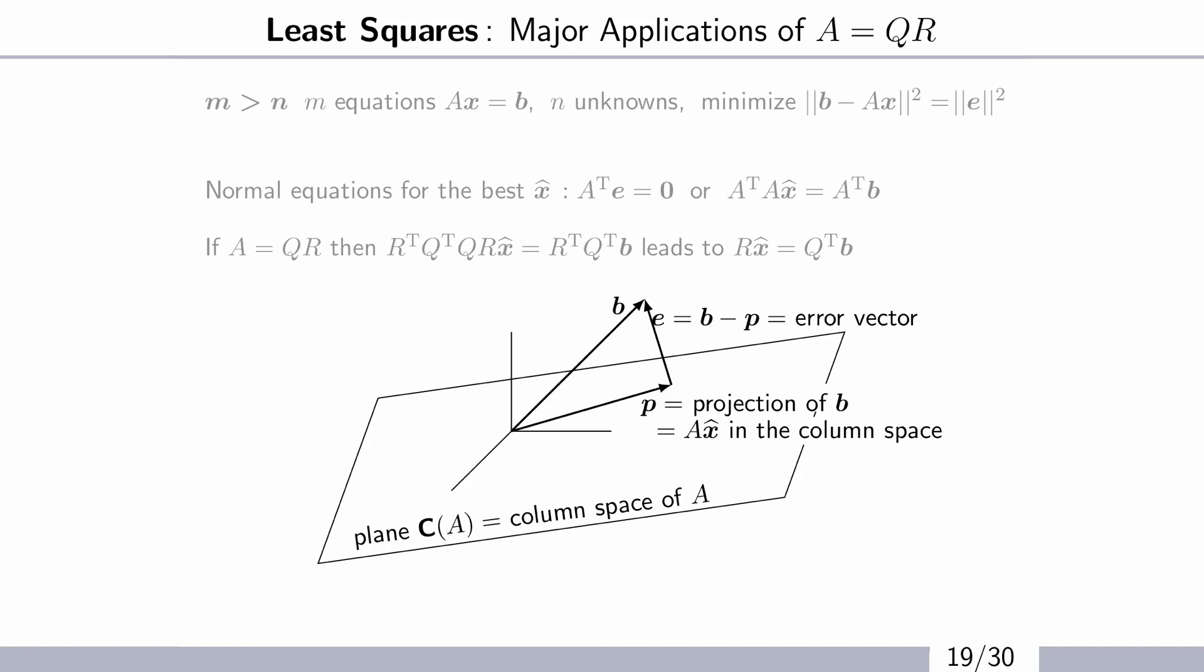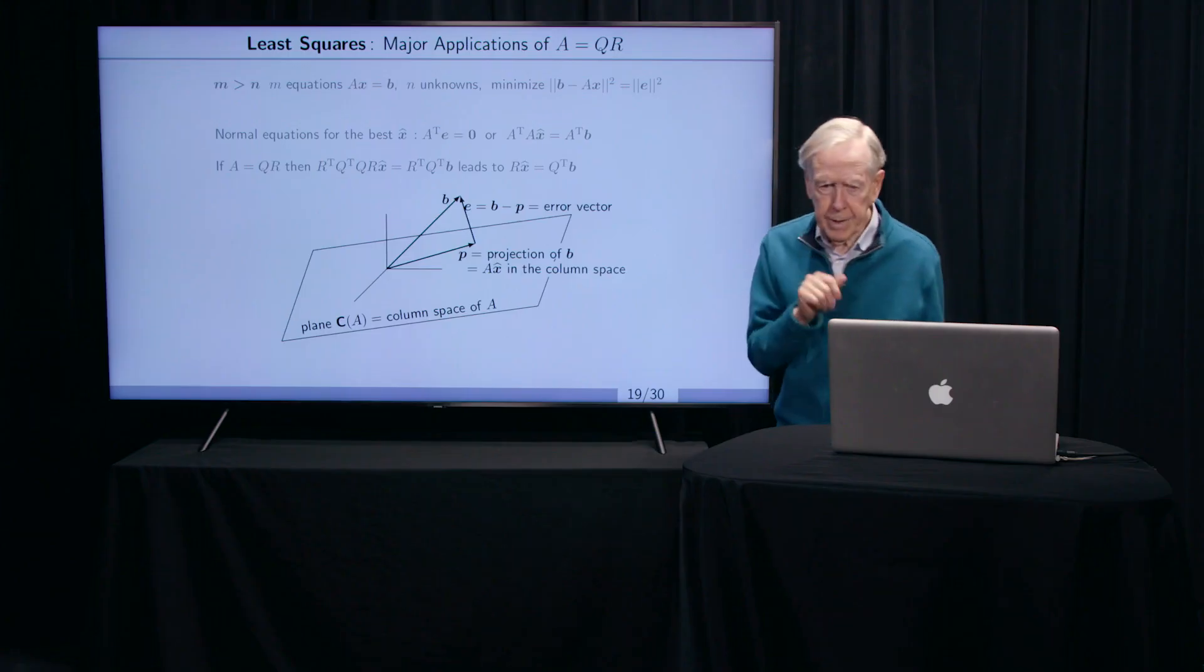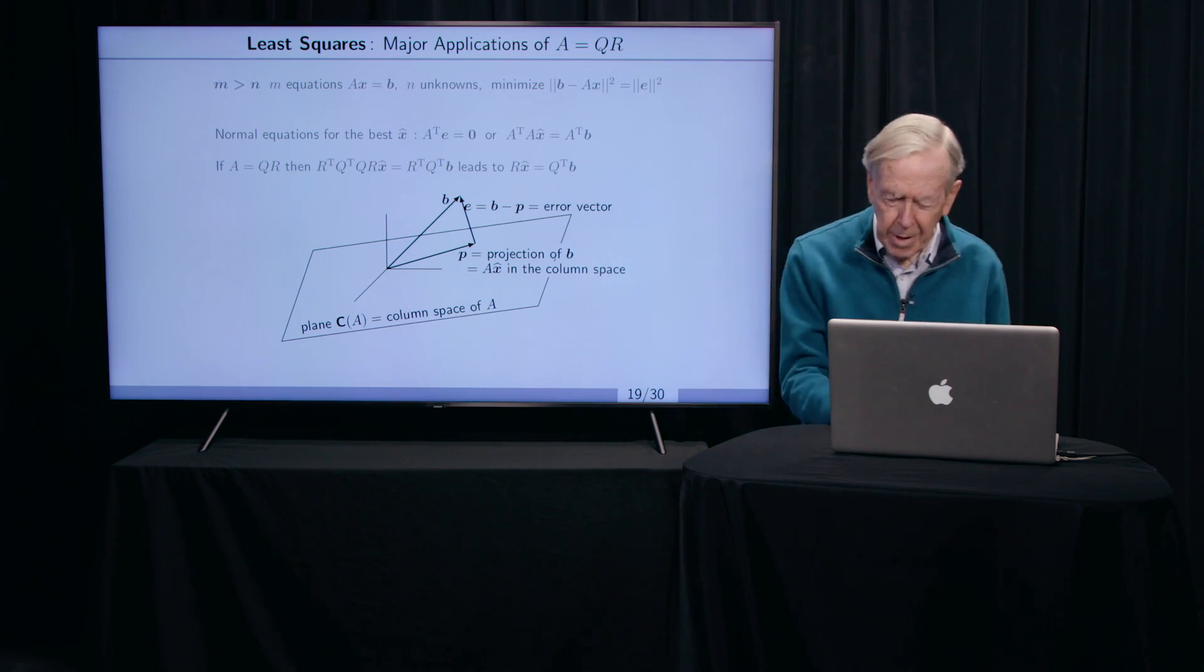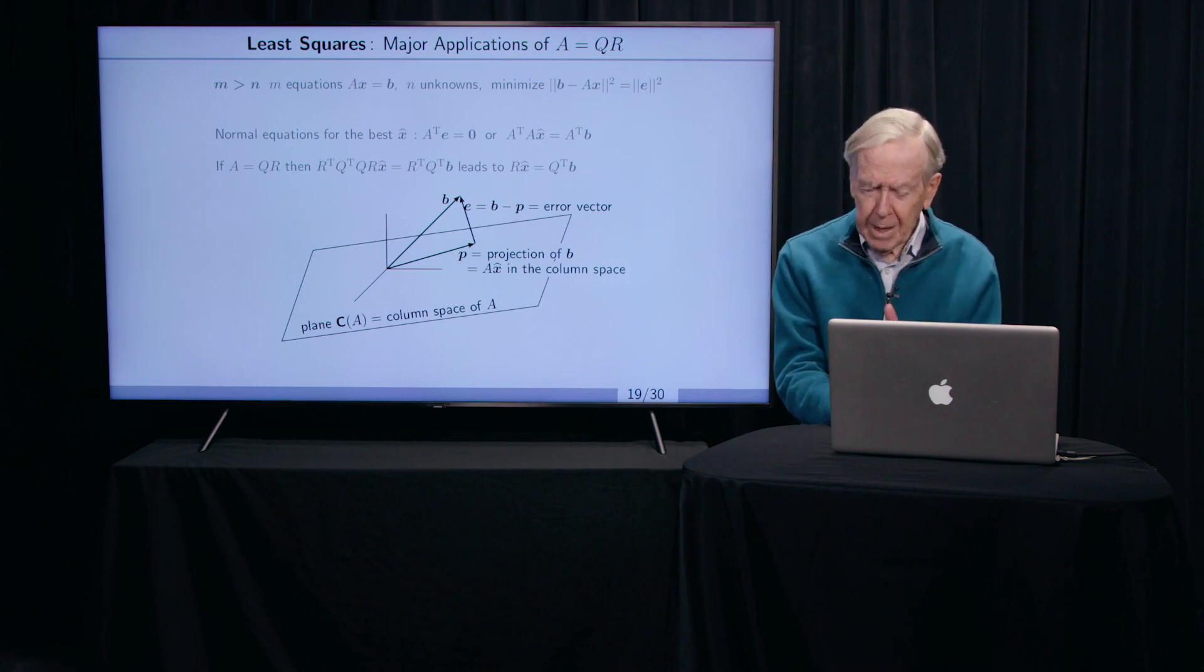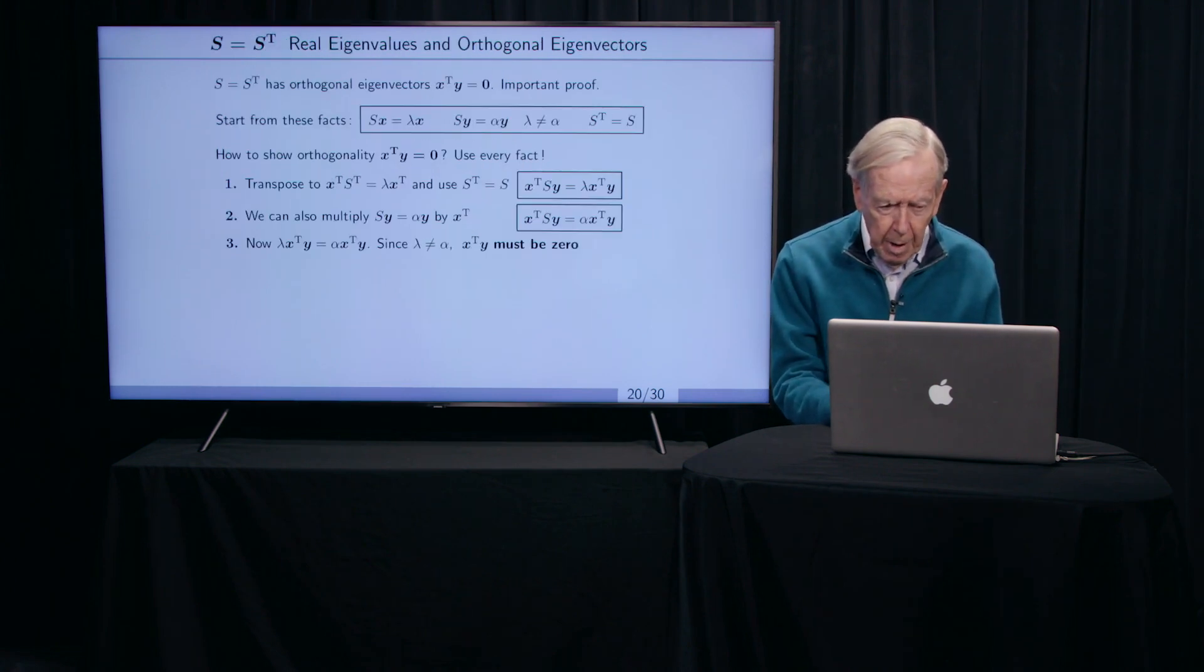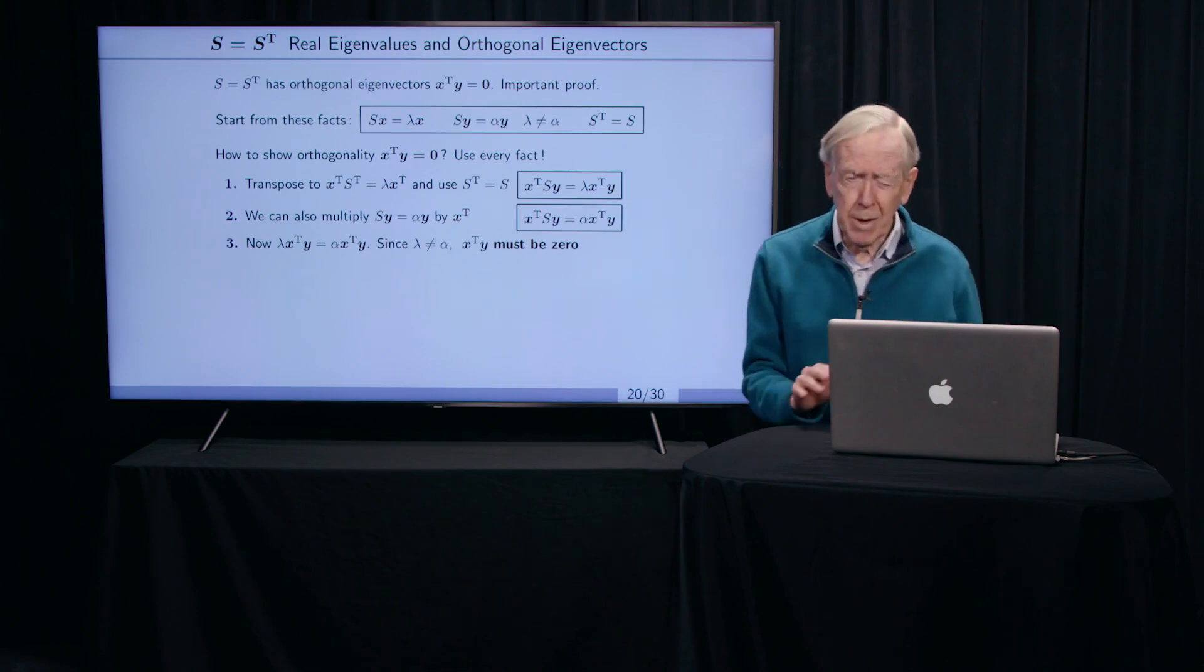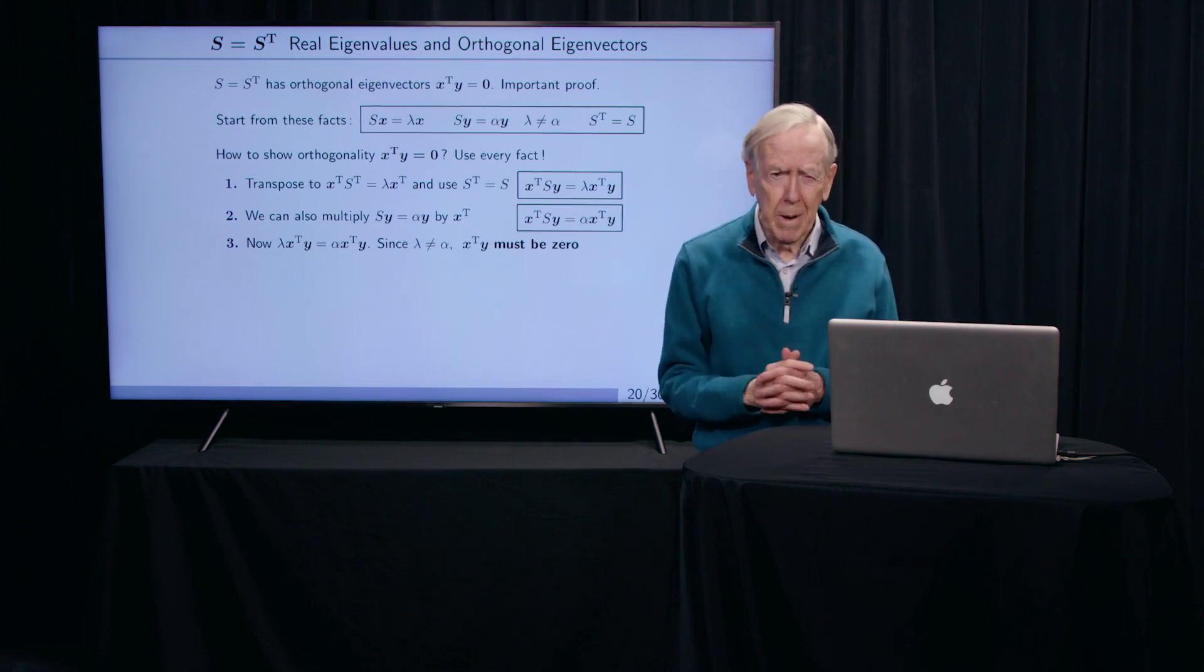That's what least squares is all about. Fitting the best straight line, the best parabola, whatever, is all linear algebra of perpendicular things and orthogonal matrices. I think that's what I can say about orthogonal. Well, it'll come in again - orthogonal matrices, perpendicular columns is so beautiful. But next is coming eigenvectors, and that's another chapter. So I'll stop here. Good. Thanks.